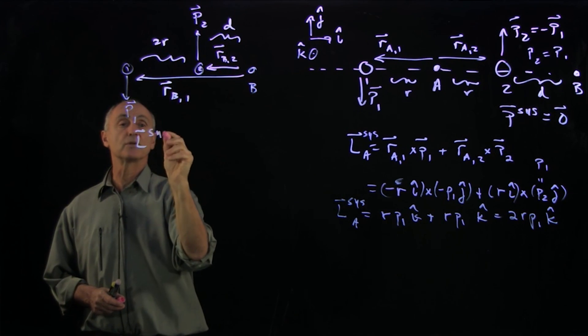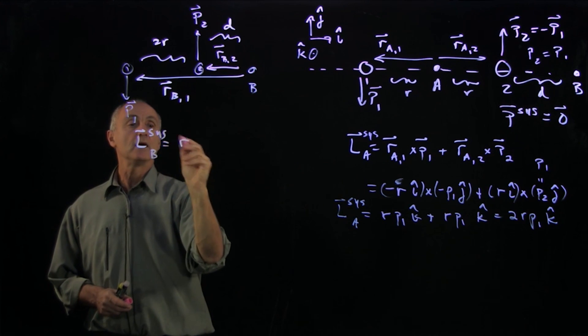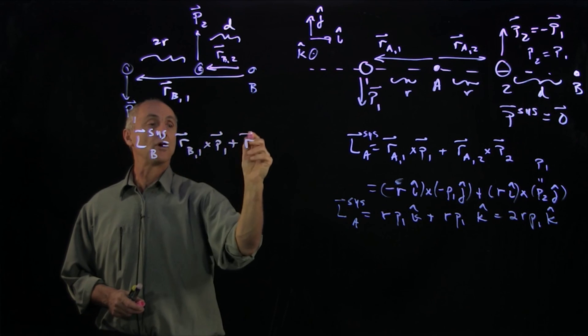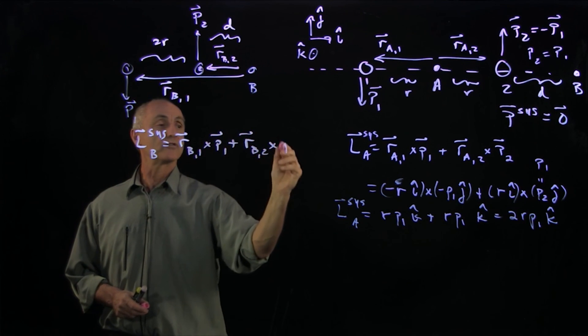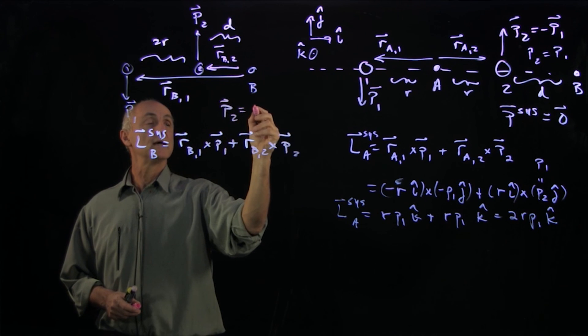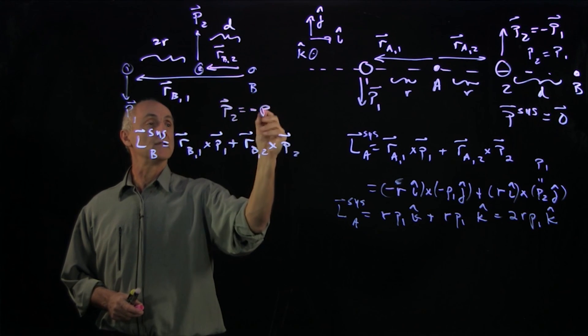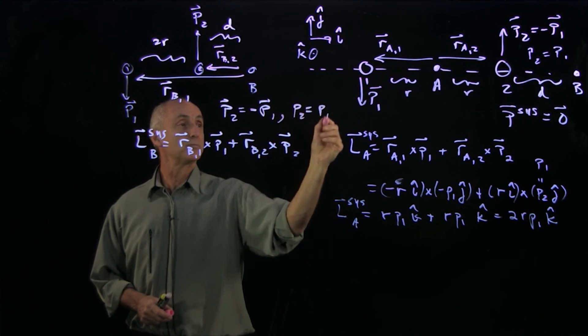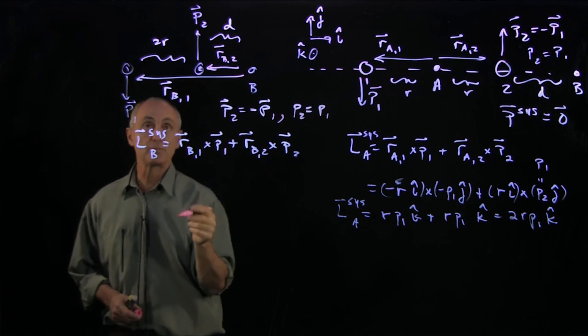And so I get L for the system about B. Again, I'll just write everything out: R_B1 cross P1 plus R_B2 cross P2. So I'm going to write P2 as, in this case, it's equal to minus P1, and magnitudes P2 equals P1 in magnitude, directions are opposite.